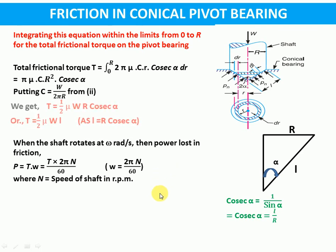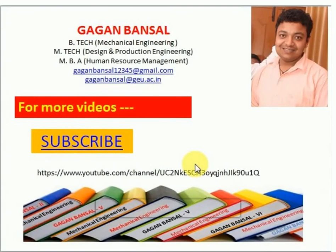Hope you are clear. So we have derived an expression for total frictional torque in case of a conical pivot bearing with two different assumptions separately: considering uniform pressure and considering uniform wear. For more videos you can subscribe to my YouTube channel, that is Gagan Bansal, or for any query you can directly mail me at gaganbansal12345@gmail.com or gaganbansal@gu.ac.in.